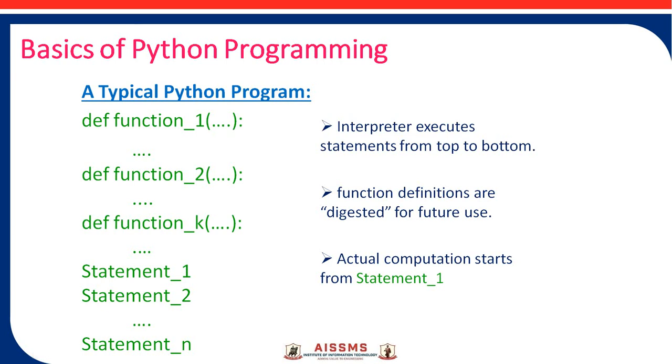The Python interpreter executes your program from top to bottom. First, it digests these function definitions, and then execution starts from statement_1. These statements use the previously digested functions for further execution.